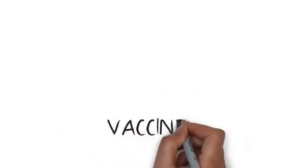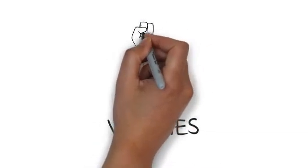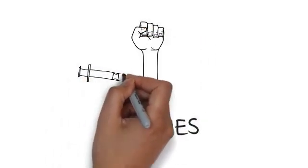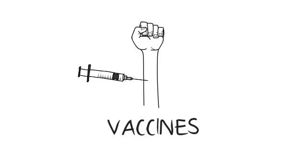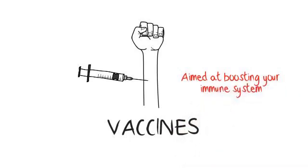Vaccines work together with the T cells and the B cells by exposing you to an inert form of the bacteria or disease, so that your body can then react to it and create memory cells. This therefore creates a response to a disease or bacteria that is inert and should not be harmful. There is one danger in that vaccines can sometimes have active bacteria within them and are usually screened for this, but overall they are aimed at boosting your immune system.